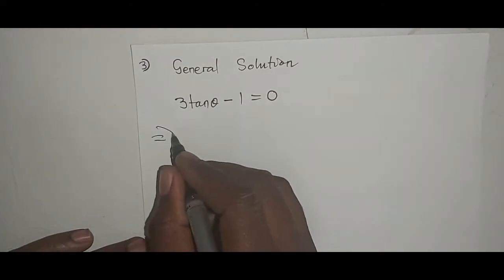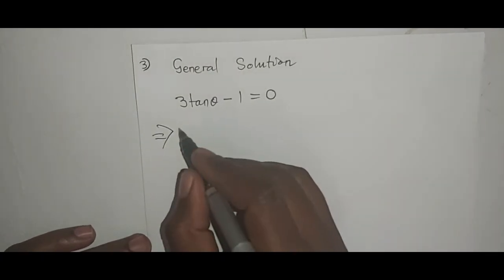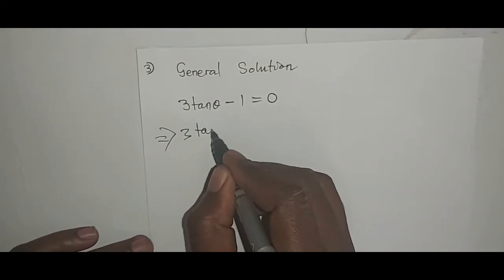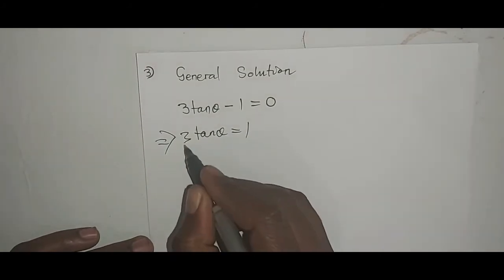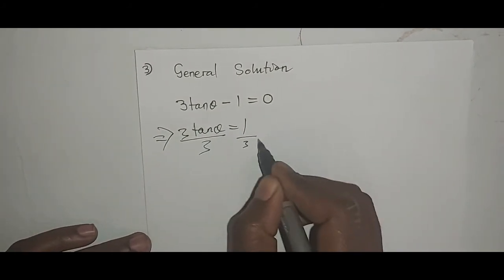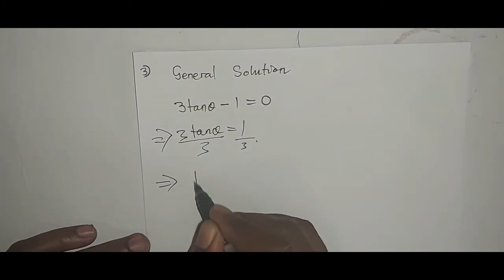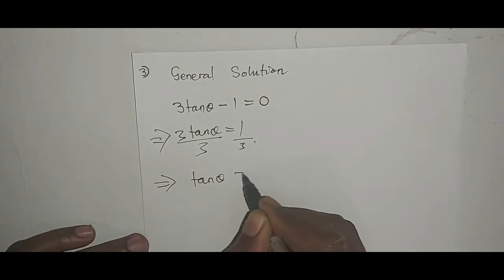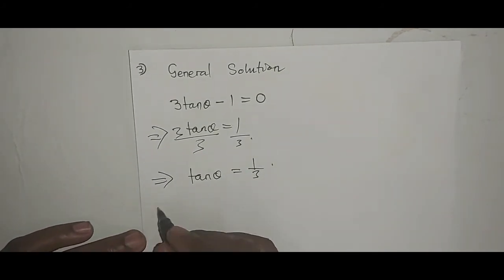Therefore, as you solve it in mind, 3 tan theta equals 1. Then I divide both sides by 3, which in this case implies that tan theta equals 1 over 3.